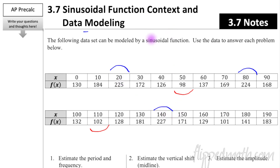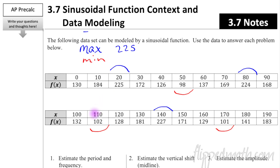All our maximums are approximately the same value, same for the minimums. We're going to approximate using nice whole numbers. For the maximums, let's use 225. For the minimums, I'm going to use 100 because that makes the math easy. So we have a max of about 225 and a minimum of about 100.